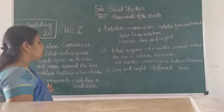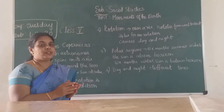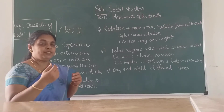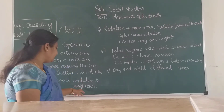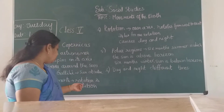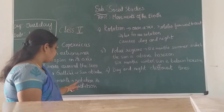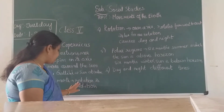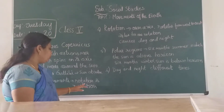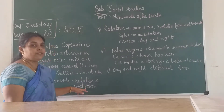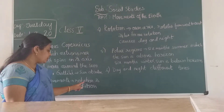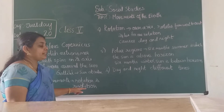There are two movements you can observe with the earth: one related to the earth itself, and another as it moves around the sun. The two types of movements are rotation and revolution. We will study in detail what is rotation and what is revolution.